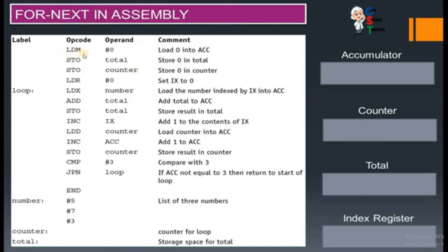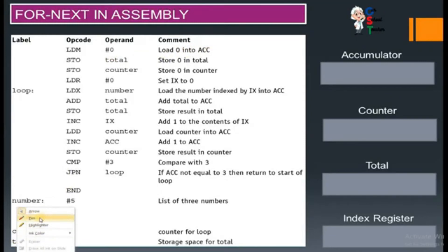The first command is LDM — load immediate. The 'M' stands for immediate. Load immediate means whatever value is written with it, that value will be stored in the accumulator. Here zero is written, so load zero into accumulator — this zero will be loaded into the accumulator.